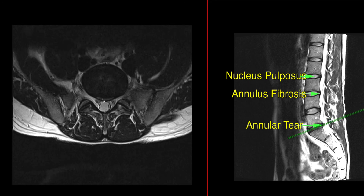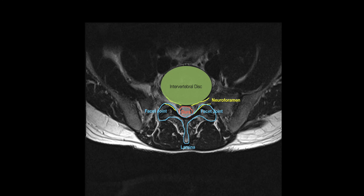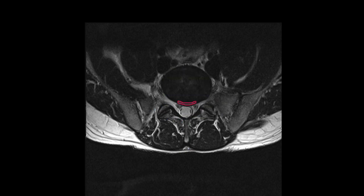I'm going to switch now to a different scene where I've animated the actual annular tear itself. On this axial image, I've labeled the intervertebral disc here in green. I'm going to draw an outline around the lamina and label that the lamina, and then the facet joint on the patient's right and the facet joint on the patient's left. In the center is the dural sac. Inside the dural sac are the nerve roots. On either side are the neuroforamen, outlined in yellow and labeled appropriately. Then we're going to remove all of these labels and identify the annular tear here in the back of the disc and label that the annular tear.